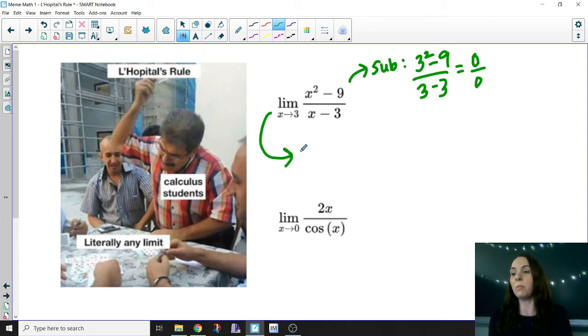We rewrite the limit as x approaches 3, but we do this really cool easy thing where we take the derivative of the numerator, x² - 9. What's its derivative? 2x, right? Over the derivative of the denominator, x - 3. What's the derivative of that? It's just 1.